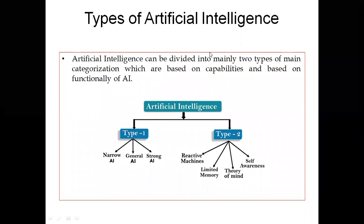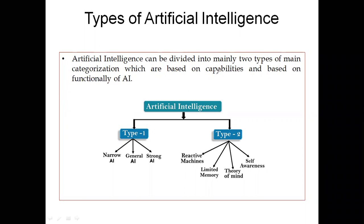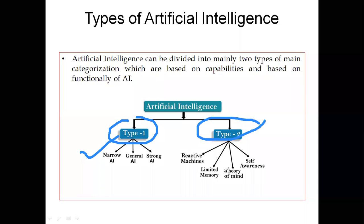Today we are going to discuss the types of artificial intelligence. We divide AI mainly into two types based on either capabilities or functionality. Under Type 1, based on capabilities, we have Narrow AI, General AI, and Strong AI. Under Type 2, based on functionality, we have Reactive Machines, Limited Memory, Theory of Mind, and Self-Awareness.